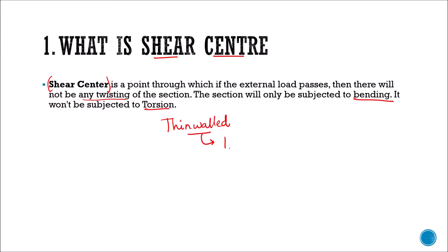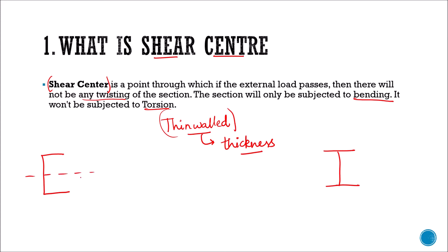What is a thin-walled member? If the thickness of a member is very small when compared to other dimensions, then it is called a thin-walled member. Two examples: a C section, which is a C-shaped thin section, and an I section. The C section is symmetrical along one axis — this is a monosymmetric section — whereas the I section is symmetrical along both the X and Y axes, making it a symmetric section. For a monosymmetric section the center of gravity will be at one position; for a symmetric section it will be at the center.